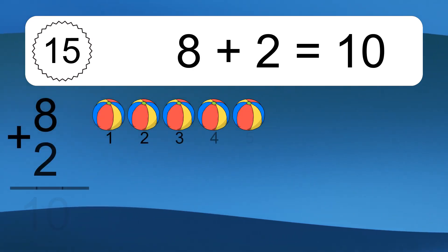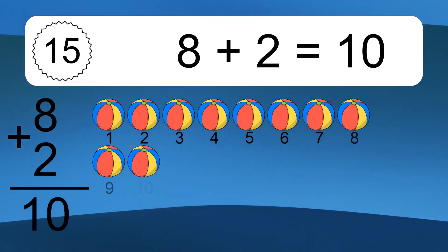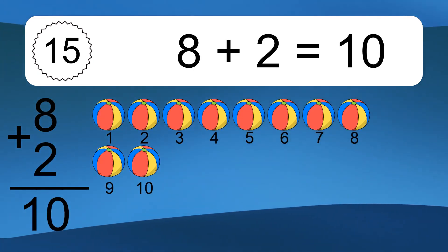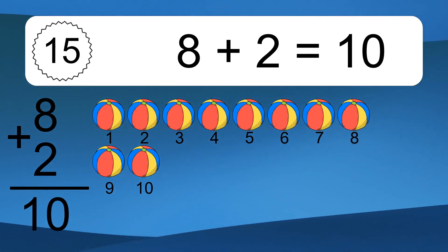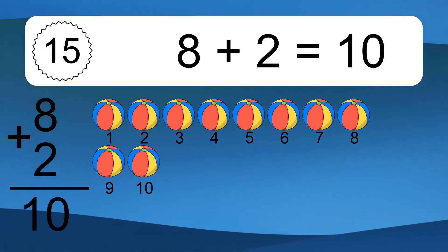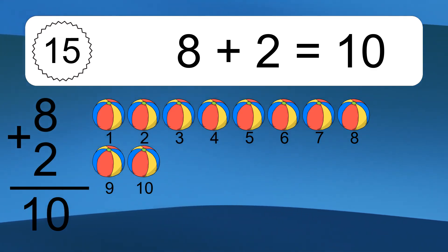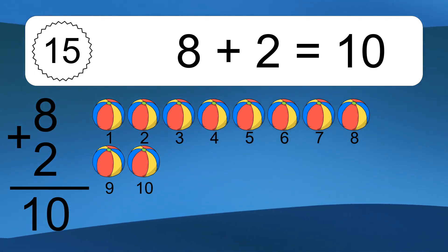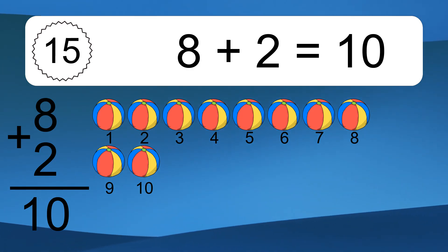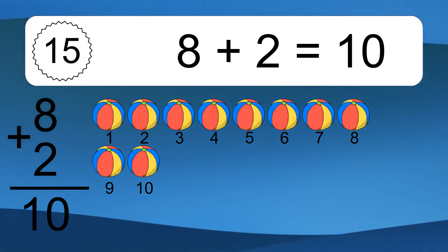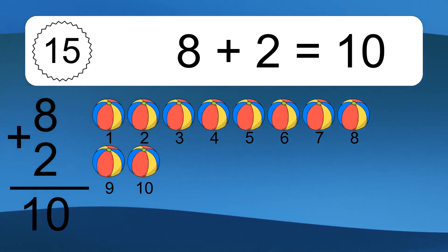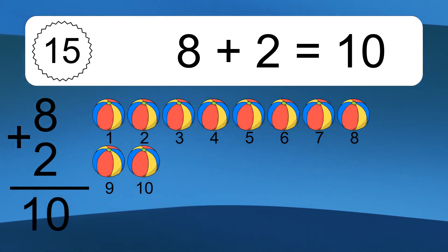8 plus 2 equals what? 8 plus 2 equals 10. Let's count it. 1, 2, 3, 4, 5, 6, 7, 8, 9, 10.